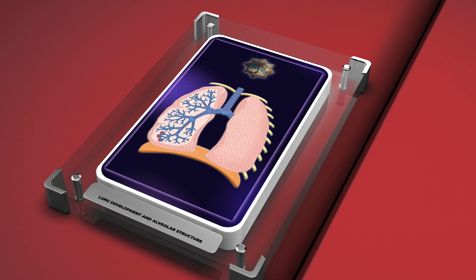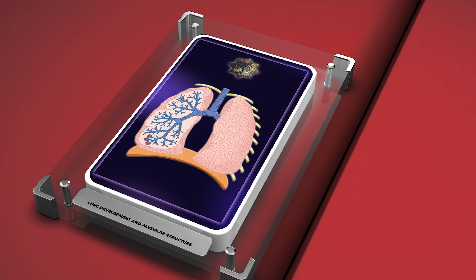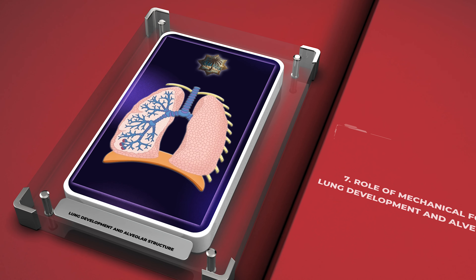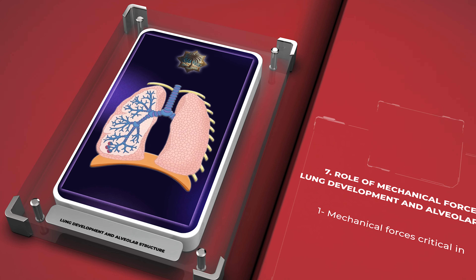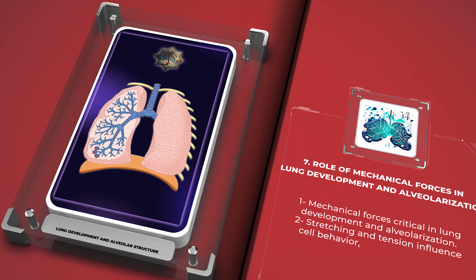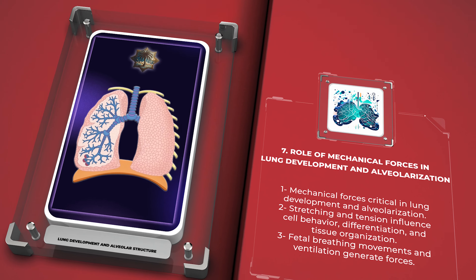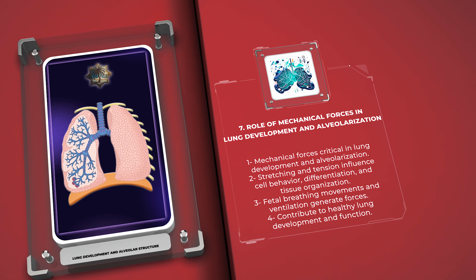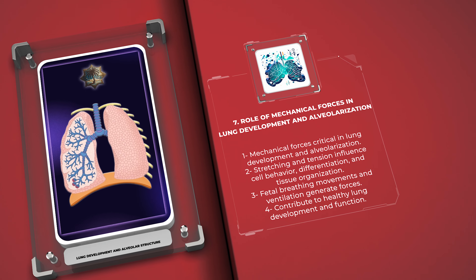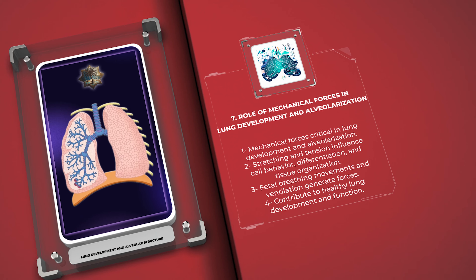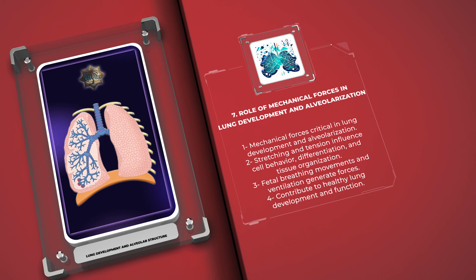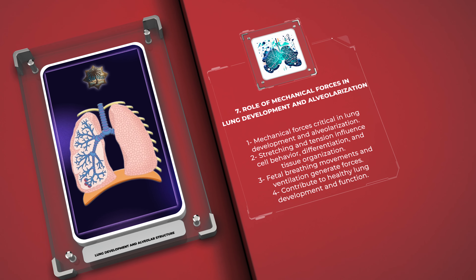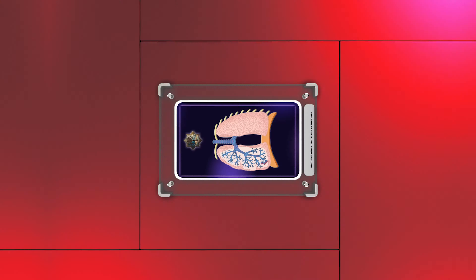In the section on the role of mechanical forces in lung development and alveolarization, we learn that stretching and tension are critical for these processes. Fetal breathing movements and ventilation generate these forces, influencing cell behavior, differentiation, and tissue organization, ultimately contributing to healthy lung development and function.